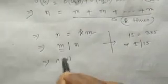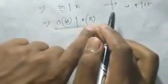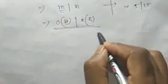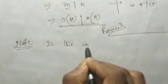Here m is the order of H and n is the order of G. We took H as any arbitrary subgroup and G as any finite group. So we have proved that the order of H divides the order of G. The main result to note is that the converse of this theorem may not be true, and we will discuss this in our next class.